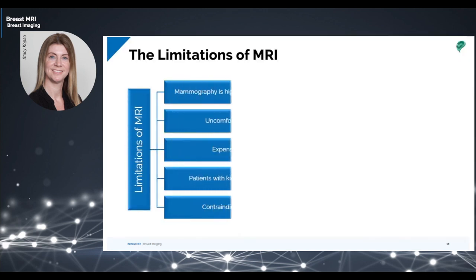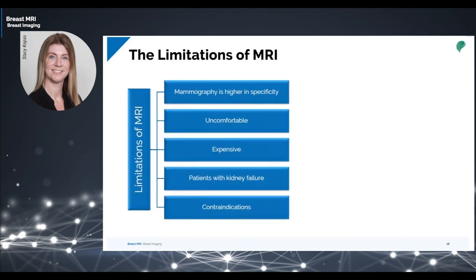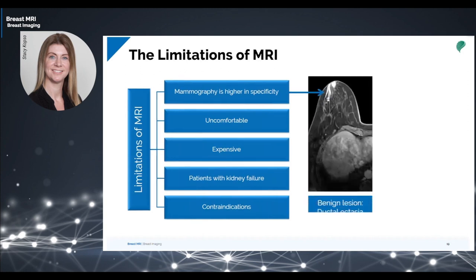However, MRI does have its limitations and restrictions as well. Studies show that the specificity of mammography is higher than that of MRI, and that is because of the contrast enhancement of both malignant and benign lesions, which causes a diagnostic challenge. Non-mass-like enhancements are associated with physiological enhancement, fibrocystic changes, and benign conditions, or even invasive carcinomas. The enhanced areas are correlated with those observed on mammography and ultrasound to determine their nature.